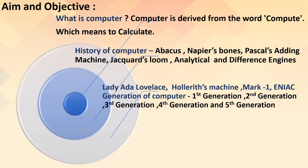The five early calculating devices are: Abacus, Napier's Bones, Pascal's Adding Machine, Jacquard's Loom, and the Analytical and Difference Engines of Charles Babbage. Now we are going to learn about Ada Lovelace, the first lady programmer, the Hollerith machine, Mark 1, ENIAC, and the generations of computers. Let's revise.